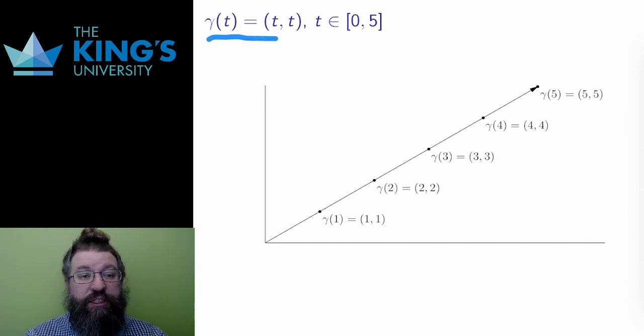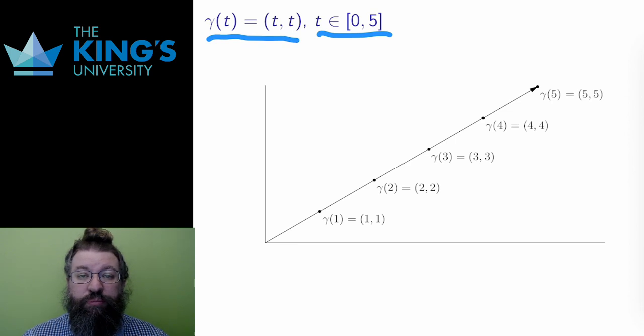Here is the curve γ(t) = (t,t), and the range is t from 0 to 5 seconds. At t equals 0, the curve starts at (0,0). And then after 1 second, the curve is at (1,1).